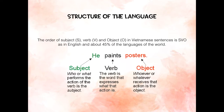Here is an example of SVO: subject, verb, object. 'He' is the subject — the who or what. 'Paints' is the verb. 'Posters' is the object — whoever or whatever receives that action.